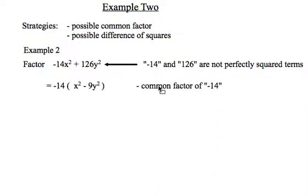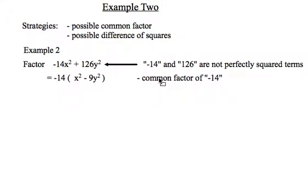So just pointing that out negative 14 and 126 are not perfectly squared terms however if I common factor a negative 14 out what I'm left with is x squared minus 9y squared and now this has a nice possibility of being a difference of squares. So when I look at those terms a little more closely I can see that I can rewrite x squared as just x in a bracket all squared and the 9y squared as 3y all inside a bracket squared. That follows the pattern for finding a difference of squares.